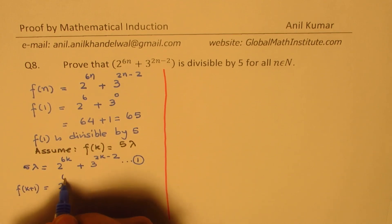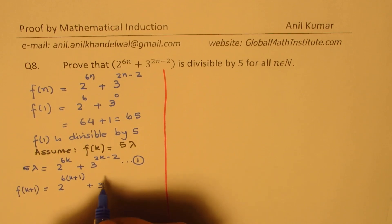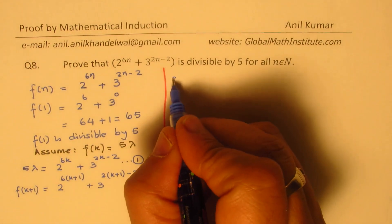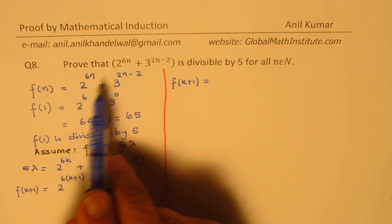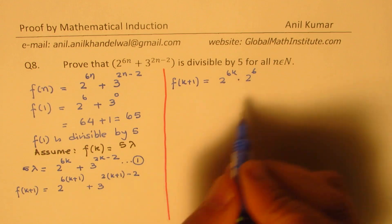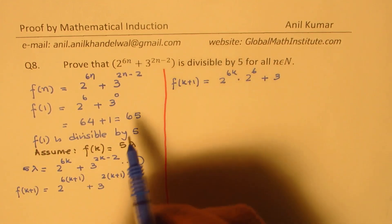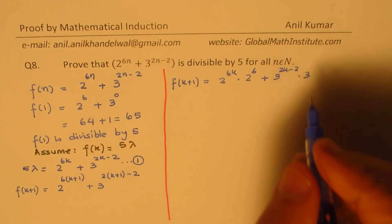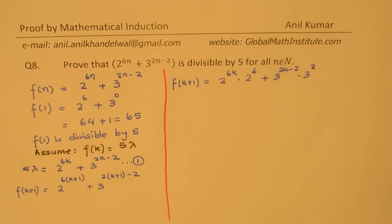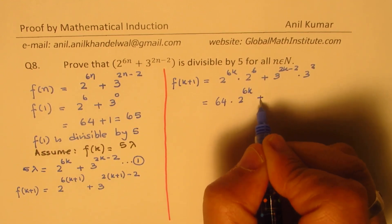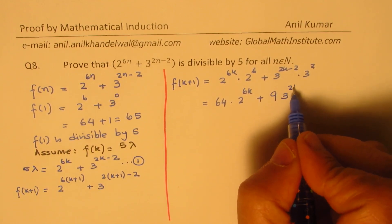So f(k+1) will be 2 to the power of 6(k+1) plus 3 to the power of 2(k+1) minus 2. Taking it to the right side, we write this as 2 to the power of 6k times 2 to the power of 6, and the second term as 3 to the power of 2k minus 2 times 3 to the power of 2. So we get 64 times 2 to the power of 6k plus 9 times 3 to the power of 2k minus 2.